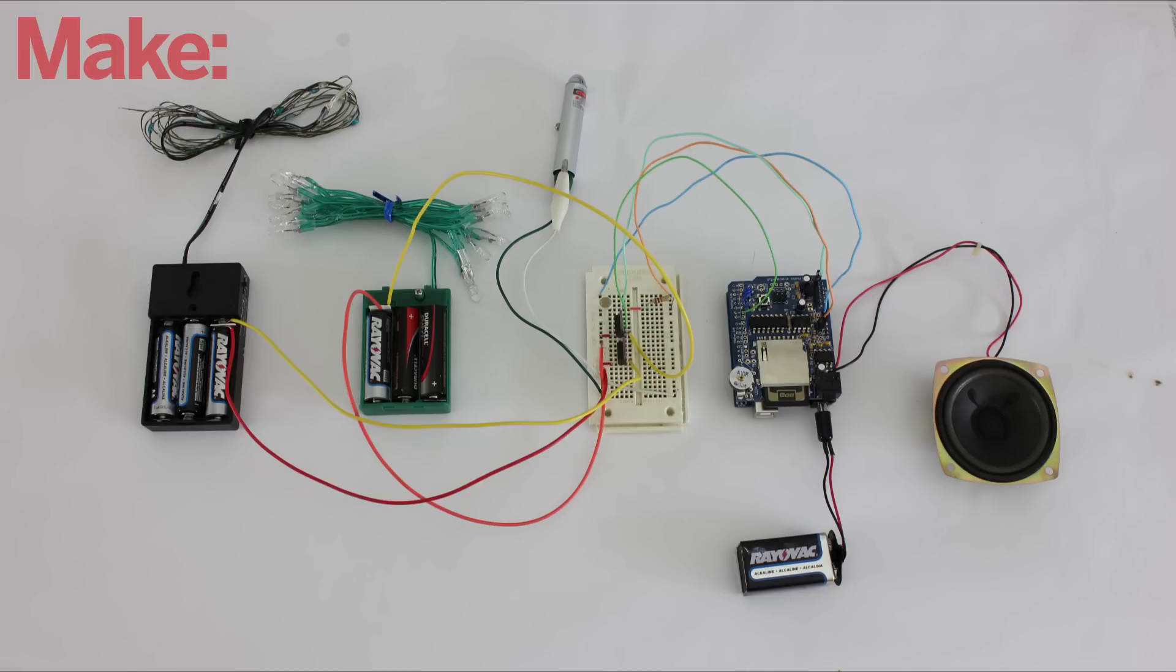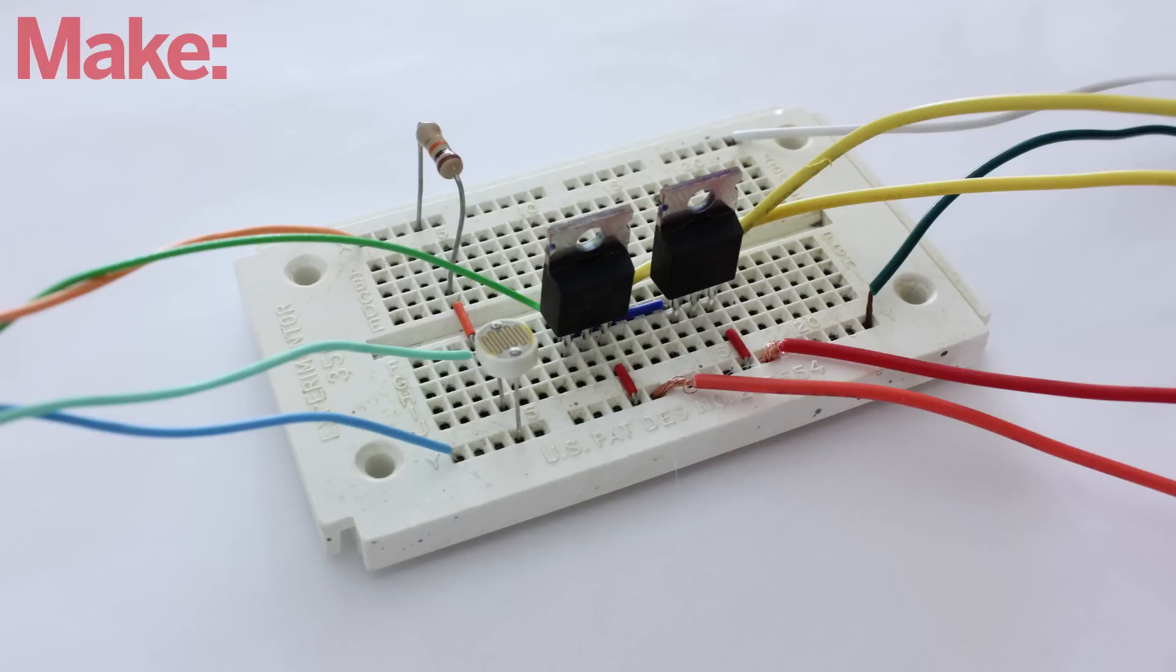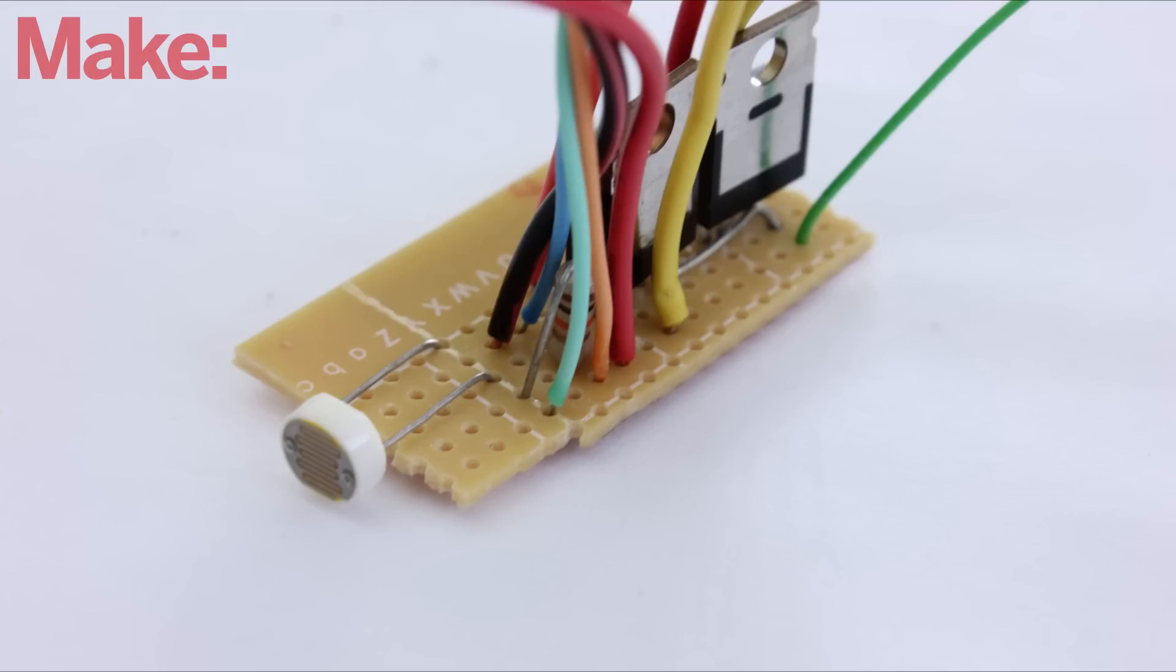Now you're ready to put all the parts of the system together. First, prototype the light sensor and the transistor circuit on breadboards. Then once this is working, you can solder the components onto a piece of perfboard.